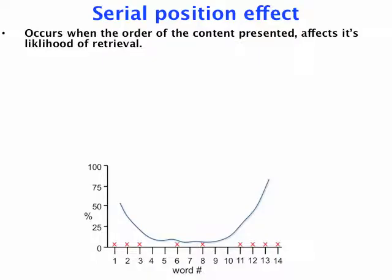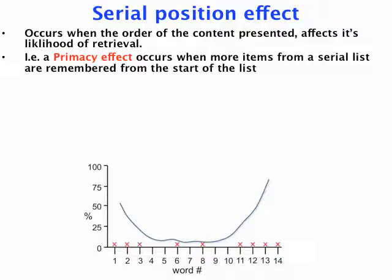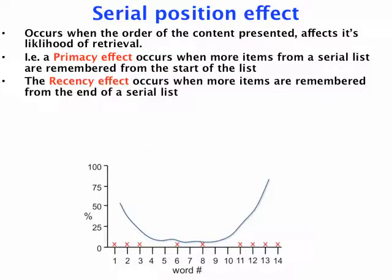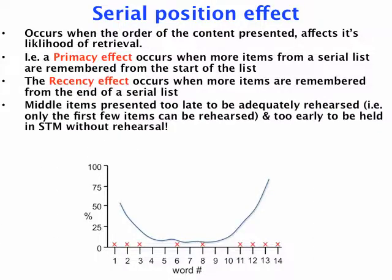So what do we mean by the serial position effect? It's when we have a serial list of information and the order that that content was presented affects its likelihood of retrieval. The two key concepts here are the primacy effect, which occurs when we have superior recall of the items from the start of that serial list in comparison to the middle items, and the recency effect, which occurs when we have superior recall of the items at the end of that serial list in comparison to the middle items.